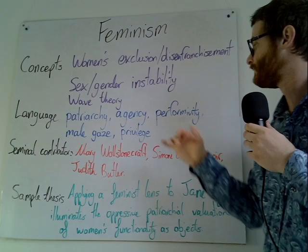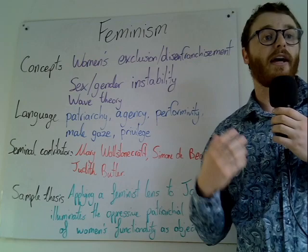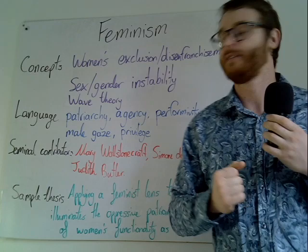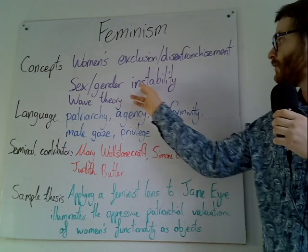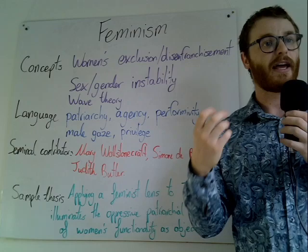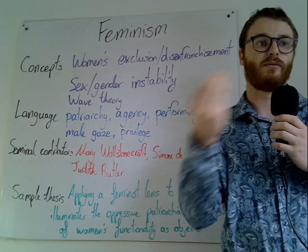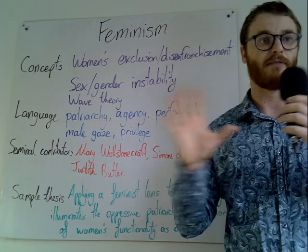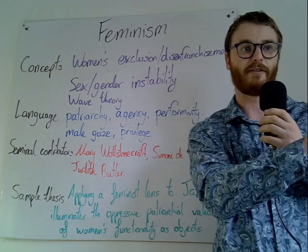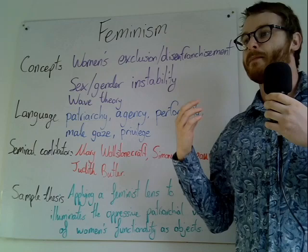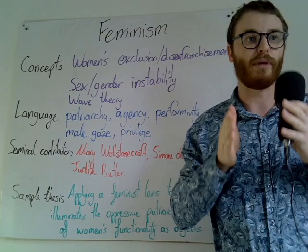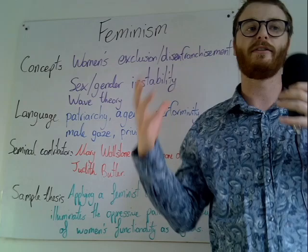The next term is agency, which means the ability to act out your own desires. Next is performativity, which links to the idea of sex and gender instability. Some acts you can perform might be more gendered towards one side or the other, and if you are getting into queer theory, there are additional dimensions beyond a simple binary scale of male to female. Performativity is the idea that you aren't locked in as masculine or feminine — there's an array of different things performed to different degrees throughout a person's whole life.